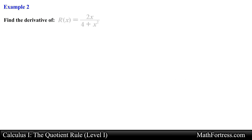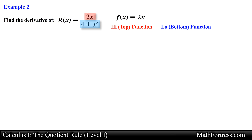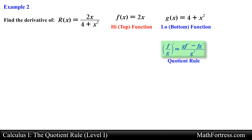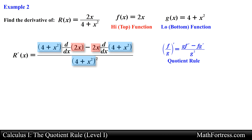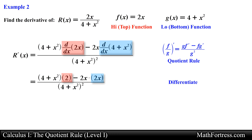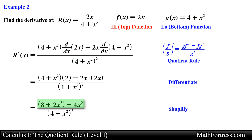Let's try the next example: find the derivative of r of x equals 2x over the quantity 4 plus x squared. Our f of x or high function is 2x, and our g of x or low function is the quantity 4 plus x squared. Substituting into the quotient rule formula and taking the derivatives of f of x and g of x, we simplify the numerator by collecting like terms, resulting in the final expression equal to the quantity 8 minus 2x squared over the quantity 4 plus x squared raised to the power of 2.